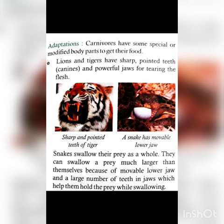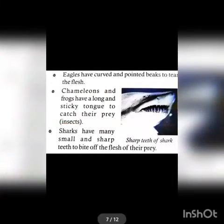Carnivores have sharp and pointed teeth and powerful jaws to tear flesh and catch prey. Eagles have curved and pointed beaks to tear flesh. Sharks have many small and sharp teeth to bite prey. Chameleons and frogs have long and sticky tongues to catch their prey.